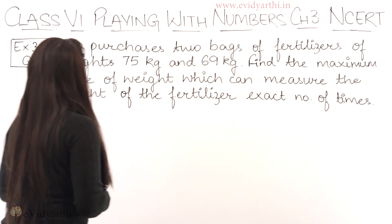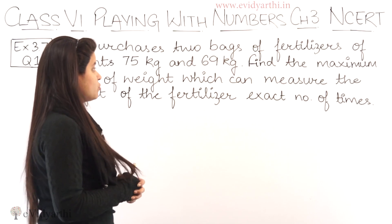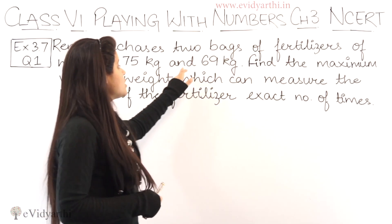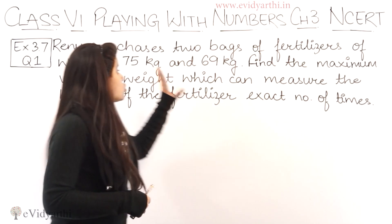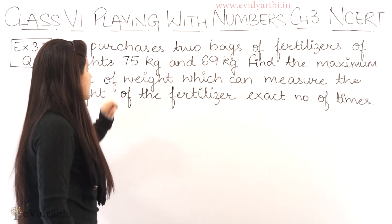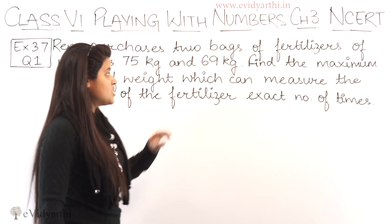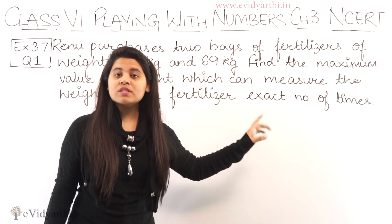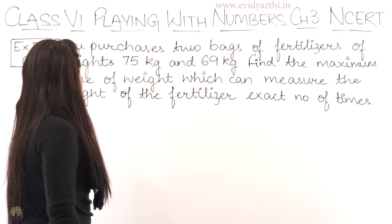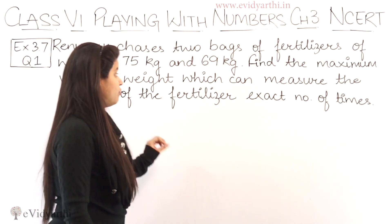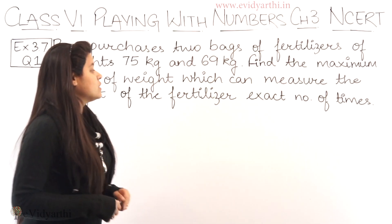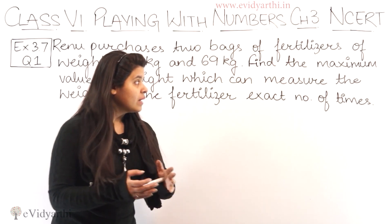In this question we have: Renu purchases 2 bags of fertilizers of weight 75 kg and 69 kg. Find the maximum value of weight which can measure the weight of the fertilizers an exact number of times.